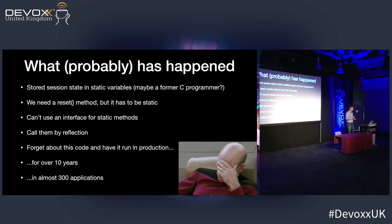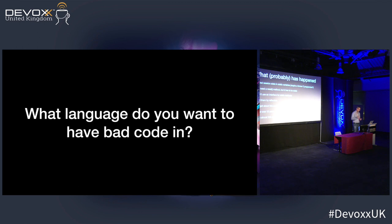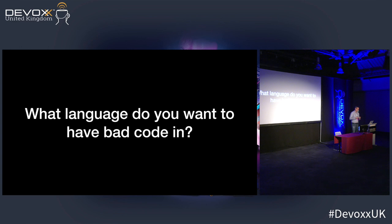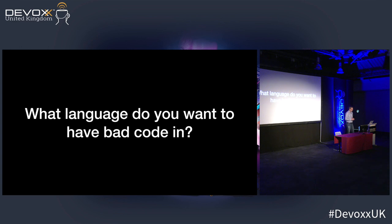I chose this example because of the massive impact it had. In conclusion, I have one question: what language do you want to have bad code in? There has to be bad code, there has to be legacy, there has to be brownfield. There are languages where bad code melts your brain, and languages like C where when the code is bad you really can't do anything. But with Java and the great JVM platform, we have a language that is very maintainable. Thank you.